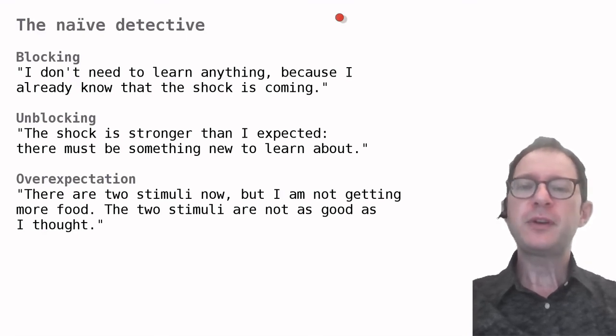This perspective gives the following suggestions for what might be going on in blocking, unblocking and overexpectation. If you look back at the experimental designs in the previous slides, you can see that the following interpretations make at least some sense. In blocking, animals in the blocking group already know that the shock is coming, because of the previous experience with the sound. They were able to predict the shock based on the presence of the sound. Maybe this is why they didn't learn about the light. There's nothing new to figure out. It's like the animal were saying or thinking, I don't need to learn anything now because I already know that the shock is coming.